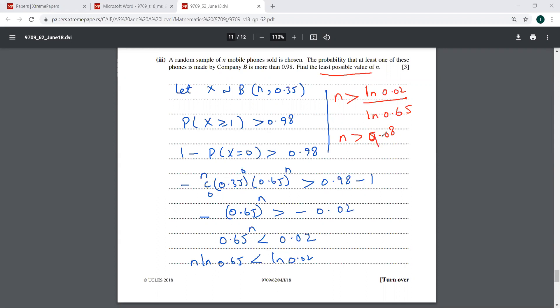So the smallest possible value of N is going to be 10. That is a small... This is going to be your answer.